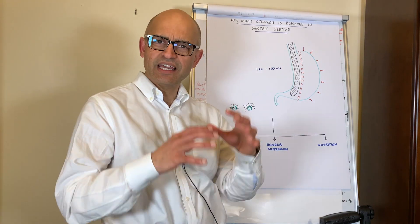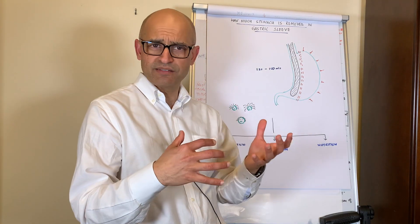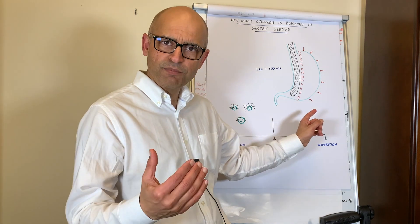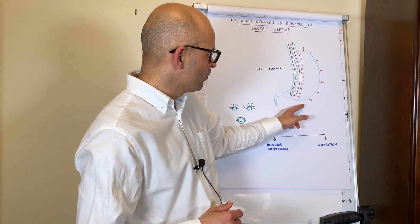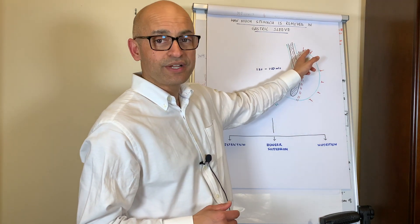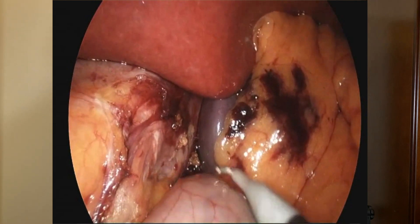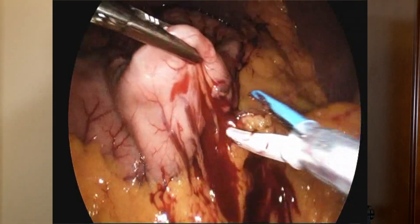The stomach is an organ like a bag, that's the best analogy that we can give you. When we start the first part of the operation, that essentially involves freeing up what is called the greater curvature of the stomach, or the outside of the stomach. This is done by using special energy devices so that we slowly take care of all the blood vessels all along the outer curvature of the stomach.